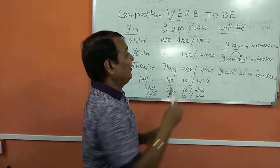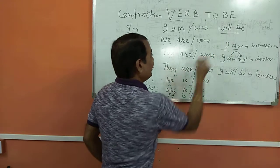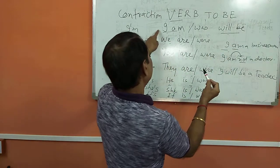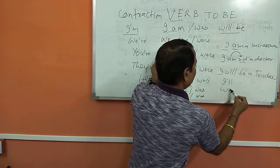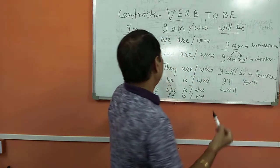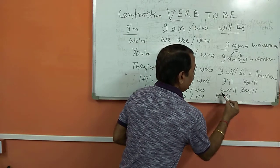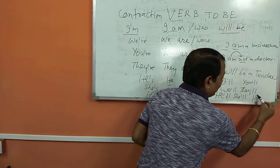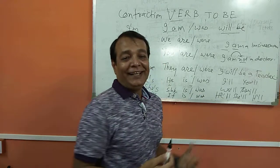What is interesting is that for the future, every pronoun uses the same pattern with 'will be': I'll be, we'll be, you'll be, they'll be, he'll be, she'll be, it'll be. The contraction is formed by writing the subject, then apostrophe, then double L: I'll, we'll, you'll, they'll, he'll, she'll, it'll. For example, 'I'll do it tonight' — that is how we speak.